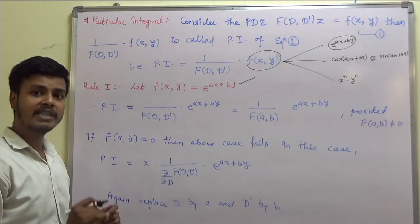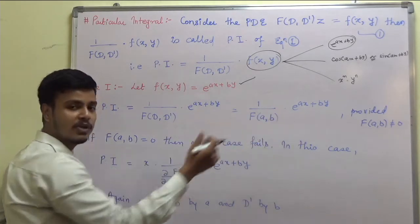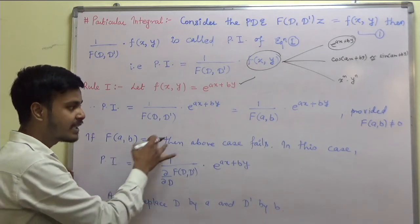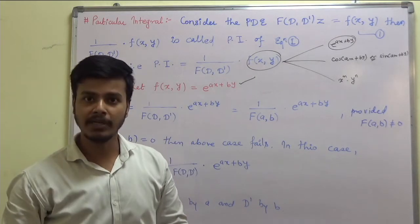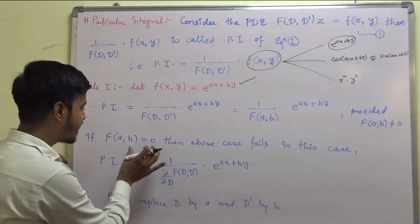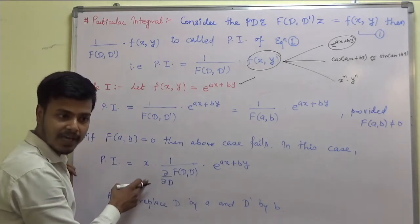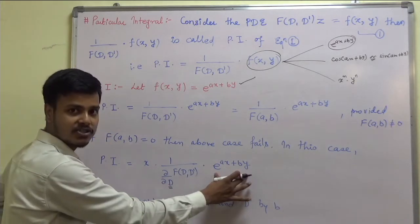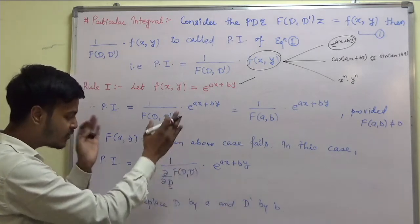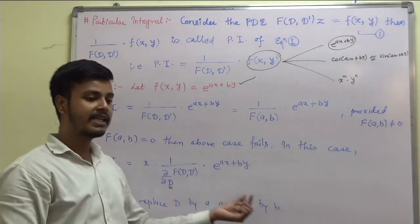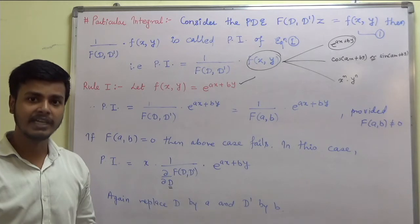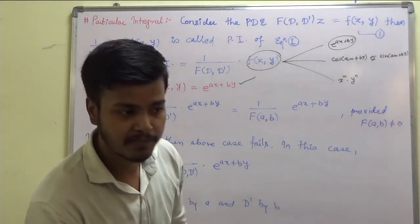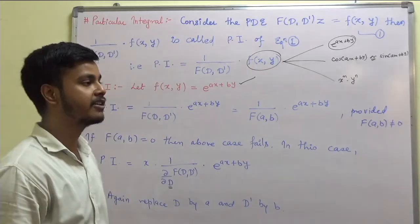But this is not always the case. Sometimes f(a, b) equals 0, and the case fails. Then you apply what I call the 'Gayatri Mantra': if your case fails, multiply the numerator by x, differentiate the denominator with respect to D, and keep the function as it is. Then again substitute D = a, D' = b and carry on. This is the method for particular integral in the first case.